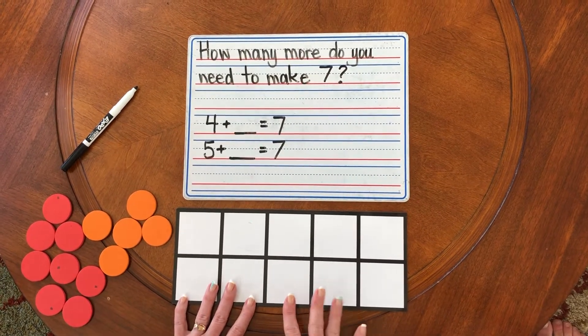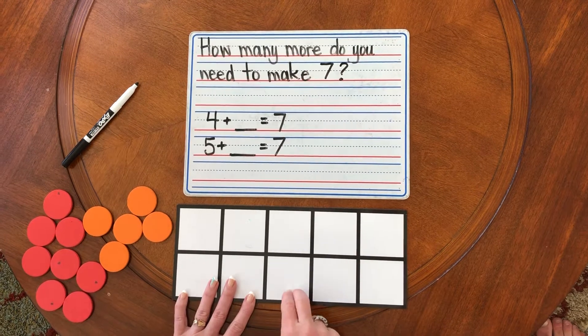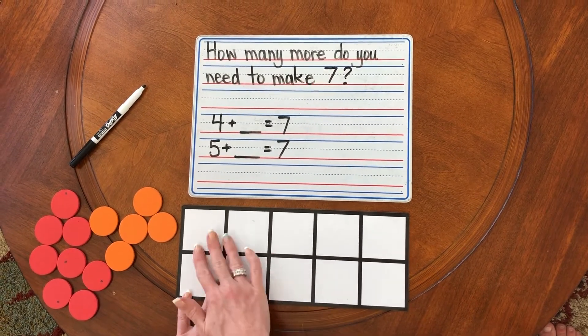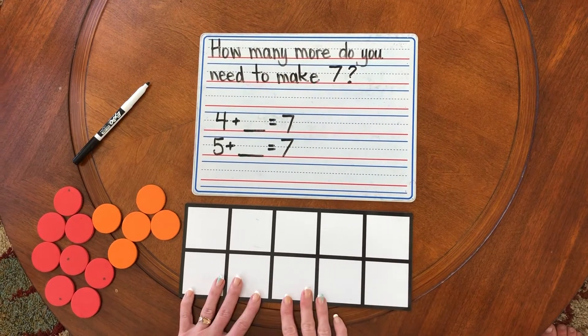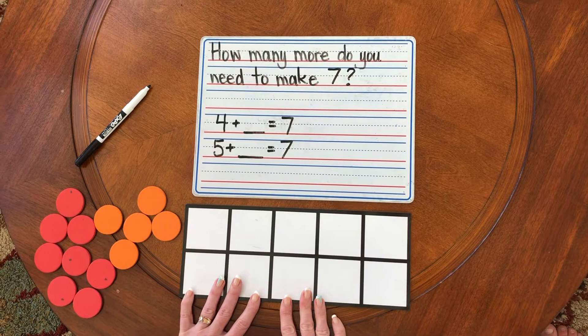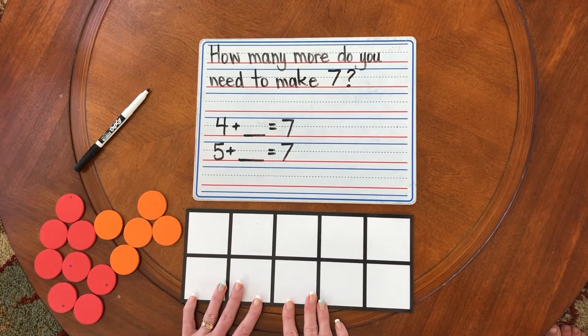You can use Legos or Goldfish or Skittles or toys to place in your 10 frame when we play our game together. Okay so let's figure out how many more do you need to make seven.